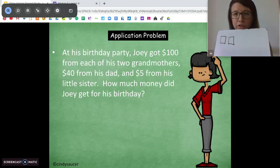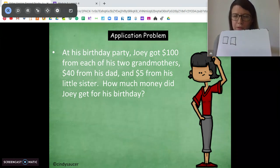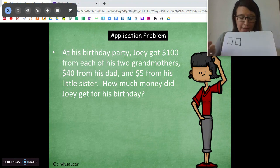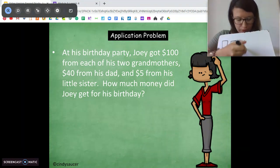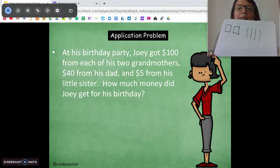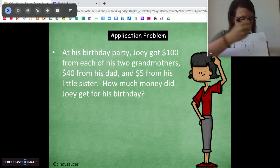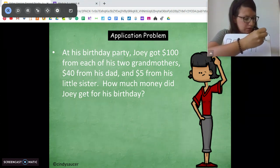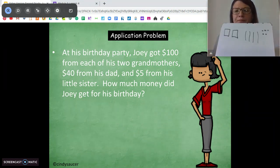And then it says he got $40 from his dad. How could we draw that? Well, I know $40 is a base 10 number, so I can use 10 sticks. So we can go $10, $20, $30, $40, right? And then he got $5 from his little sister. Now, that's not quite $10, so I'm just going to take my little ones, $3, $4, $5, and draw five ones.